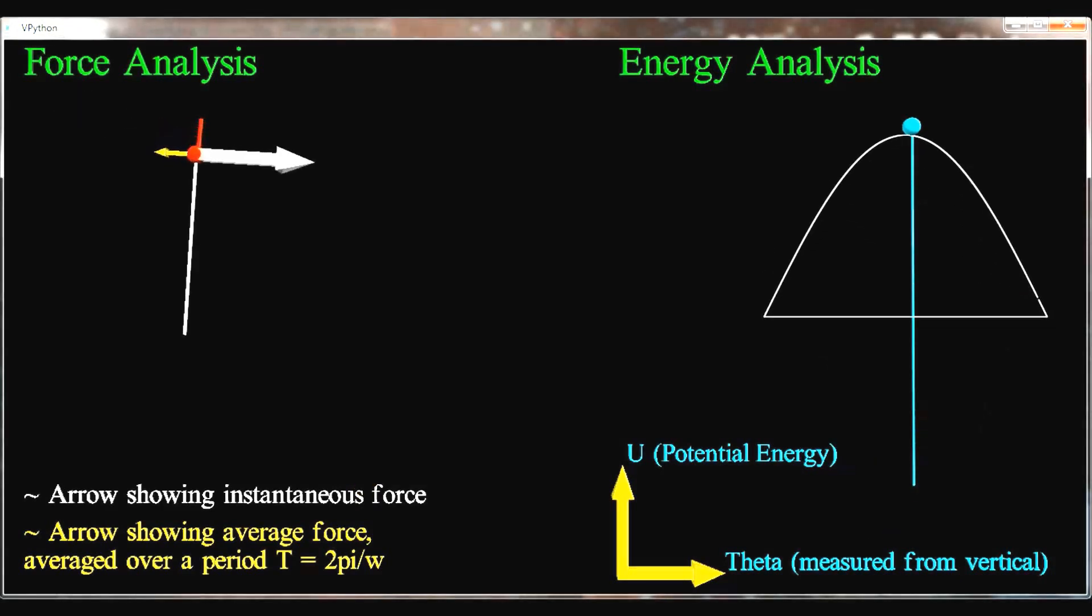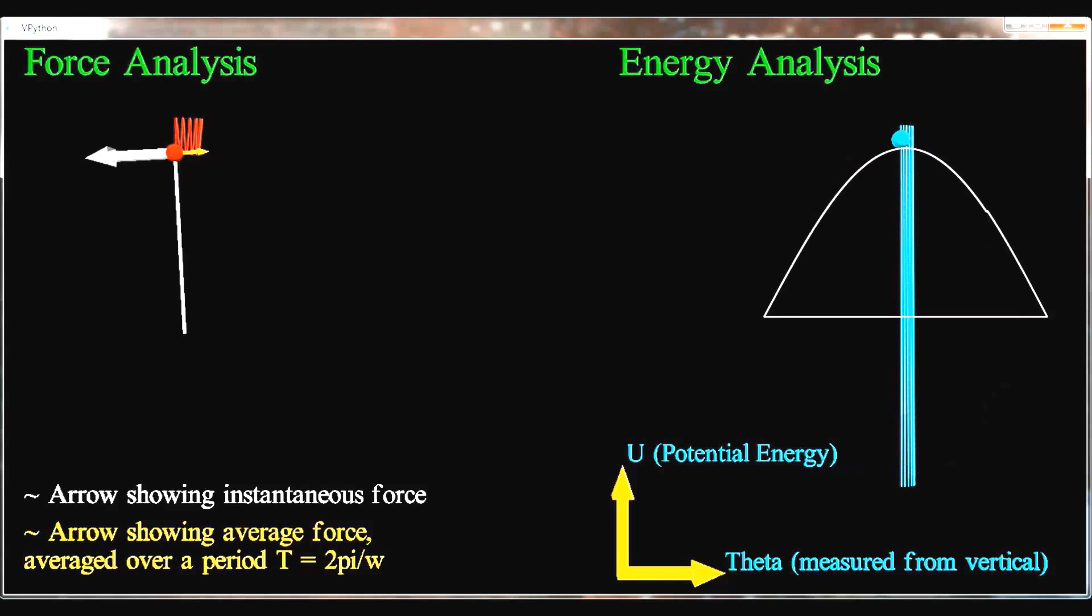Now with a driving frequency of 100 radians per second, we can see the system is stable. Looking at the energy analysis on the right, as the energy changes with time, the curve drops all the way above and below the center line, and this is clearly what stabilizes the system. You can also see with the force analysis on the left, the average force over a period is always pointing in the direction that stabilizes the pendulum.